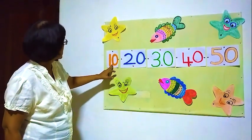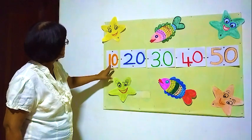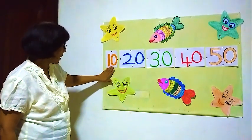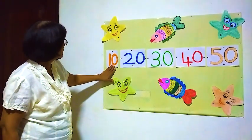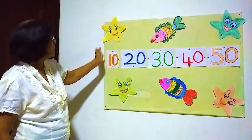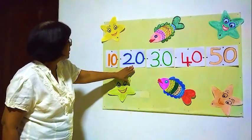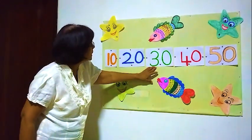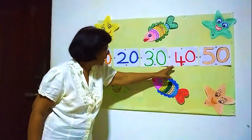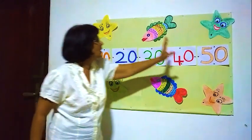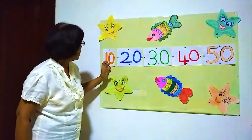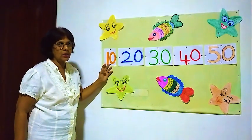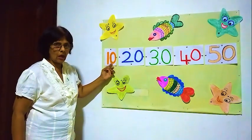Now here: 1, 0. 1, 0 is 10. After 10, 20. All 10s here. Then 30, 40, 50. See how we have to write 10: 1, 0 — 10.